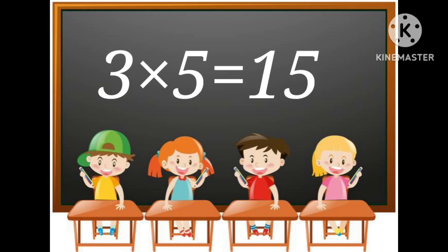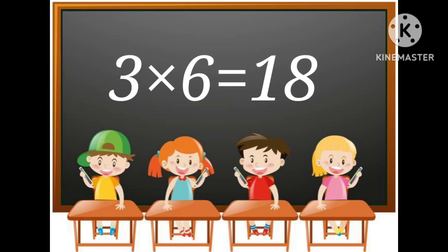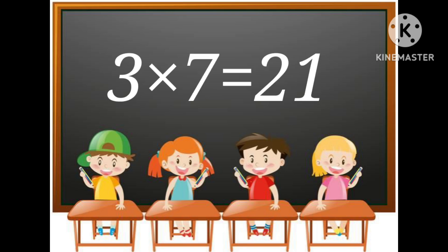3 multiplied by 5 is equal to 15. 3 multiplied by 6 is equal to 18. 3 multiplied by 7 is equal to 21.